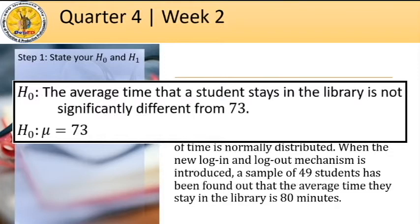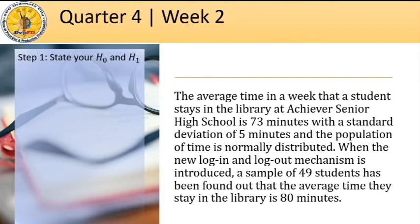Or in symbols, we can write this as H₀: μ = 73. The alternative H₁ is the opposite of our null hypothesis. We can write it as H₁: μ > 73. This is based on our observation that the average time is 80, which is greater than the original average time of 73. In some cases, the alternative hypothesis can be written as μ ≠ 73 depending on what the researcher wants to do. This will be discussed further in later chapters.